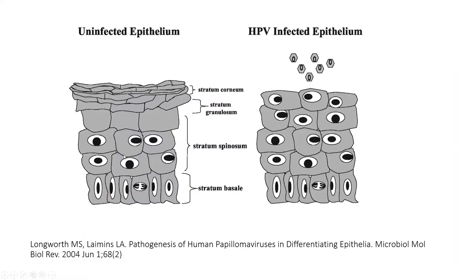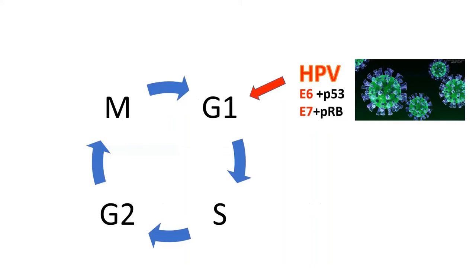Regarding HPV pathogenesis: in normal uninfected cells, cells exit the cell cycle as they leave the basal layer, resulting in loss of nuclei in suprabasilar cells. However, in HPV infection, infected cells remain active in the cell cycle due to the action of E7 protein. E7 binds to the retinoblastoma (RB) family of tumor suppressor proteins, while E6 binds to p53 and results in its ubiquitination. These proteins facilitate stable maintenance of episomes and stimulate differentiated cells to re-enter the S phase, resulting in dysplasia and neoplasia.